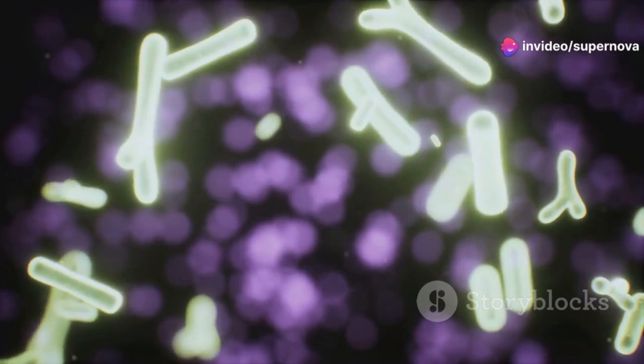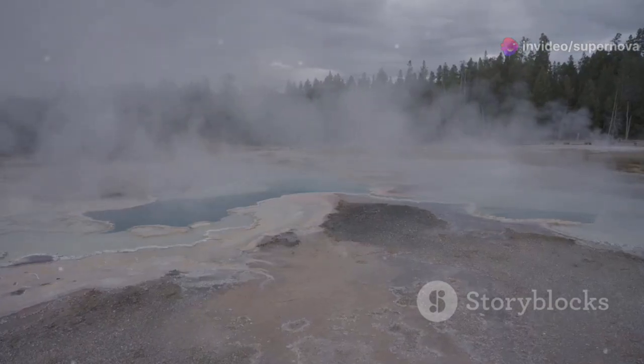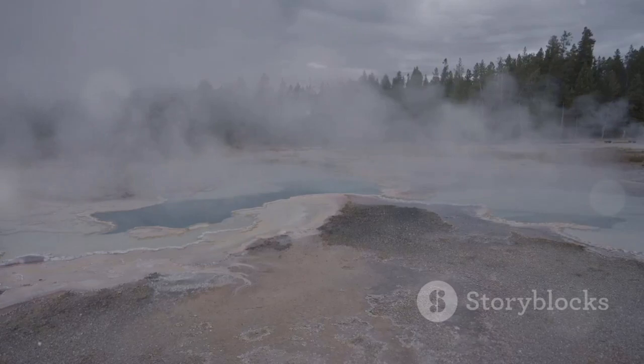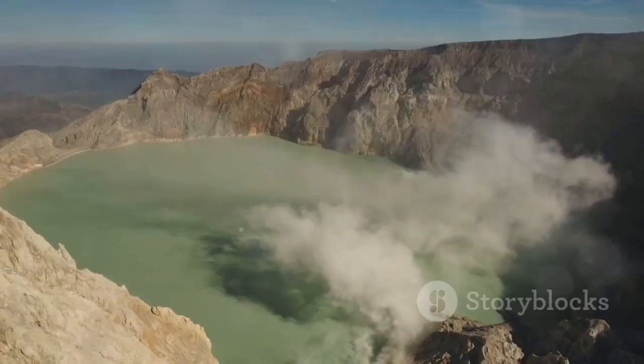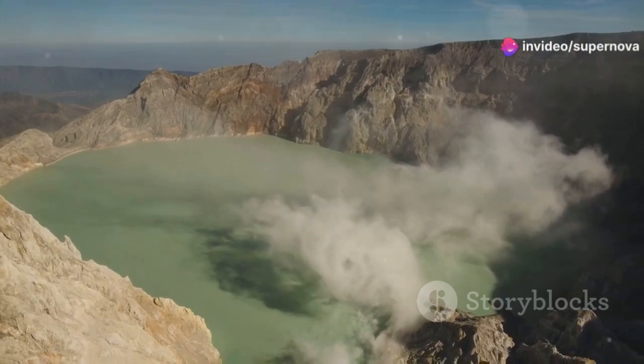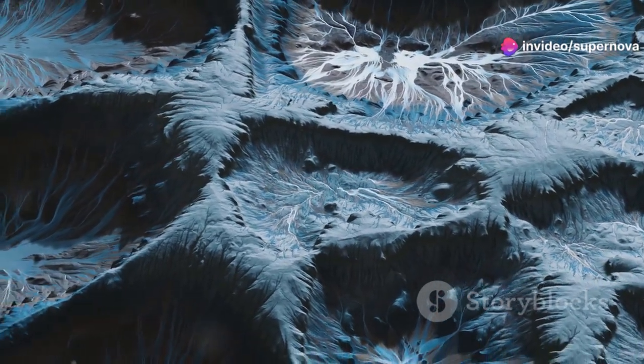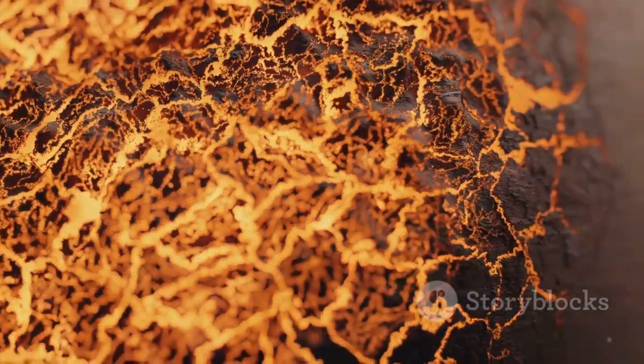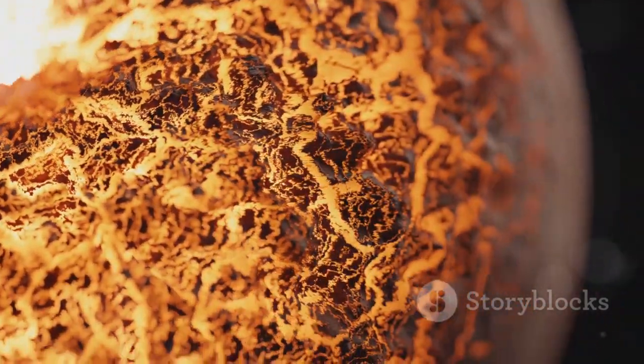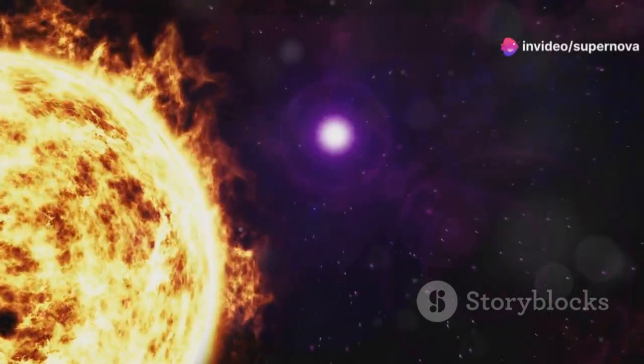These organisms thrive in environments that would be deadly to most other life forms. We find extremophiles in the boiling hot springs of Yellowstone National Park and the freezing waters of Antarctica. Some even survive in the highly acidic runoff of mines. These organisms demonstrate the incredible adaptability of life. If life exists on Proxima b, it has likely found ways to adapt to the harsh conditions. It might have evolved protective mechanisms against stellar flares or found refuge in underground oceans.